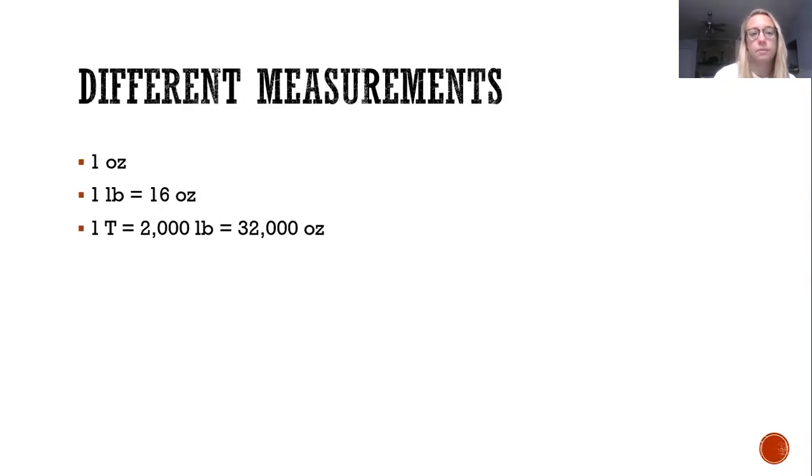So our different measurements: ounce is the smallest. One pound is equal to 16 ounces. One ton is equal to 2,000 pounds or 32,000 ounces. One kilogram is equal to 1,000 grams. Remember that in our metric system everything is multiples of 10 or 1,000. So one kilogram is 1,000 grams.